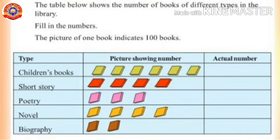At first, children's books. We know that the picture of one book indicates 100 books. So 6 books indicates 600 books. Next, short story: 4 books of short story indicates 400 books.